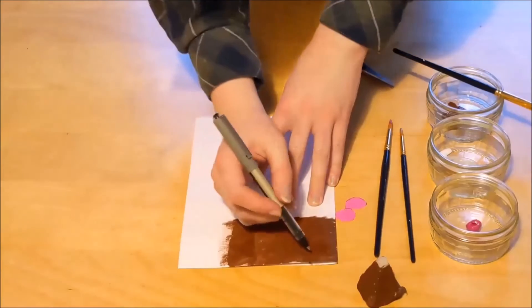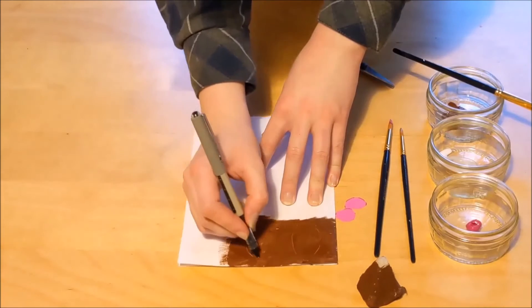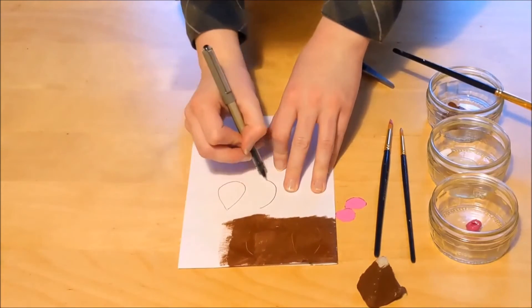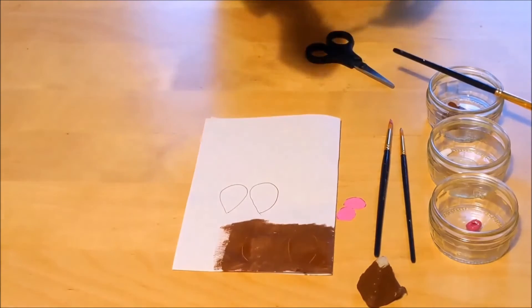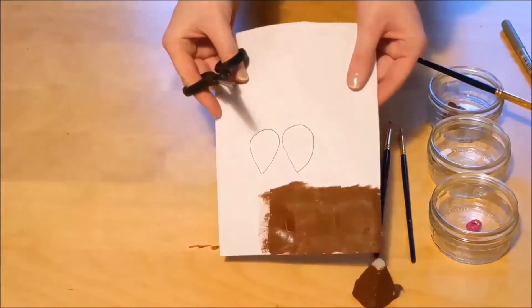Next we're going to want to draw two ovals on the painted section. You're looking for that kind of shape—kind of a pointed oval. And cut it out.